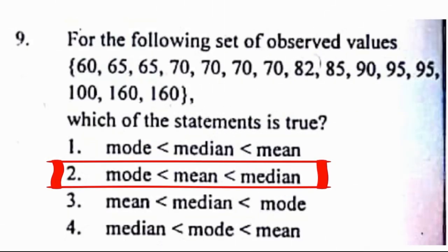Problem number 9: For the following set of observed values, which of these statements is true? The correct answer to this problem is option 2, that is mode is less than mean is less than median.